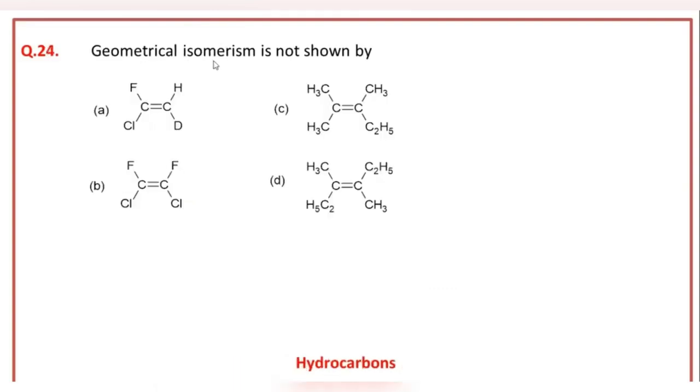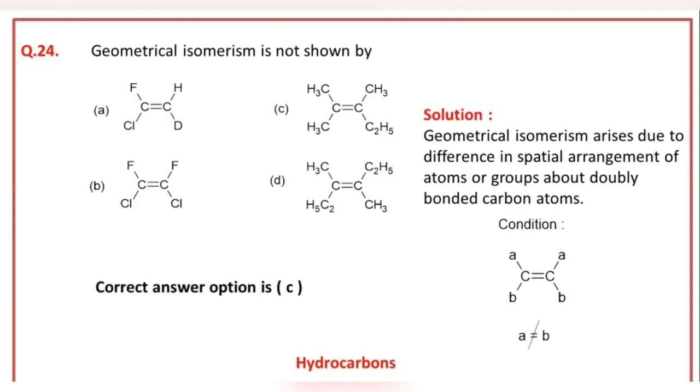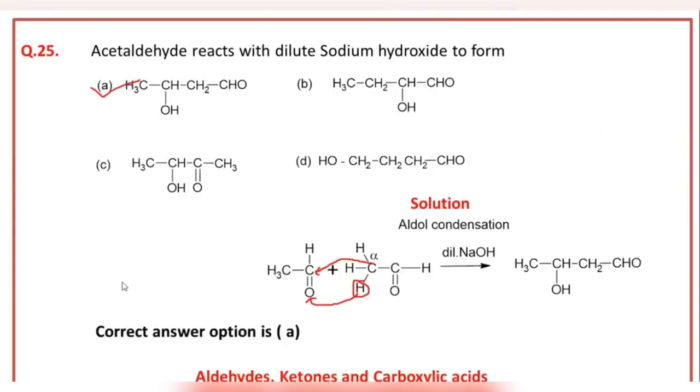Geometrical isomerism is not shown by: the correct answer option of this question is C. A is the correct answer option.